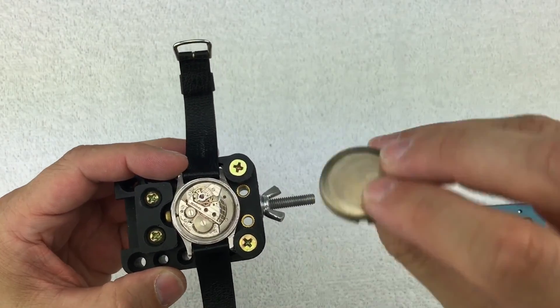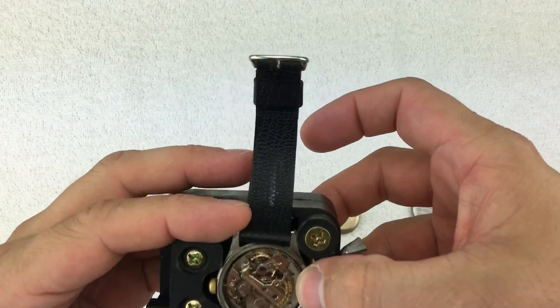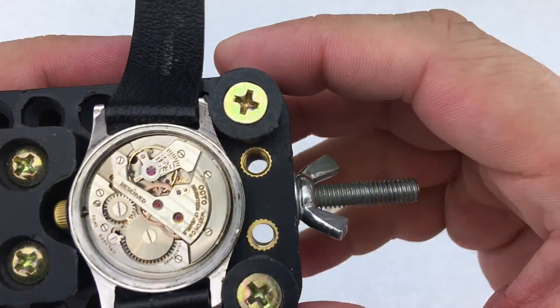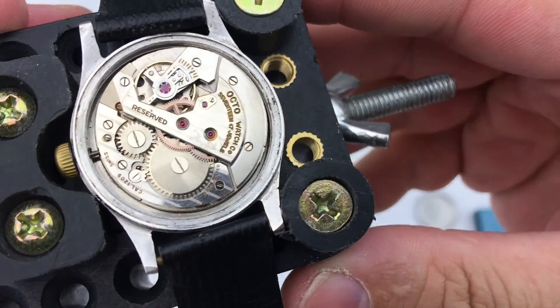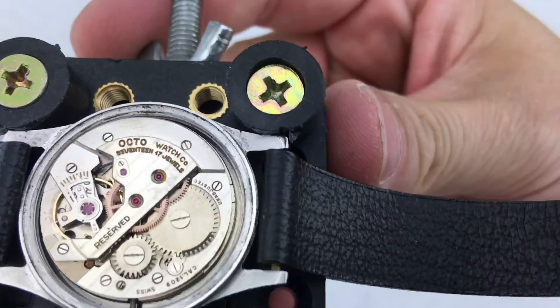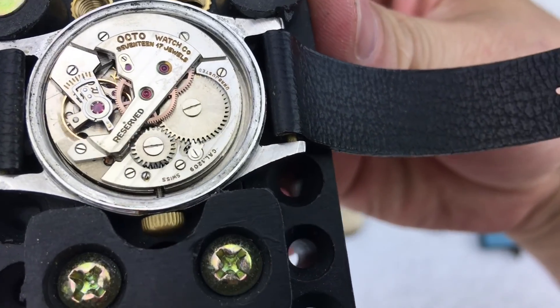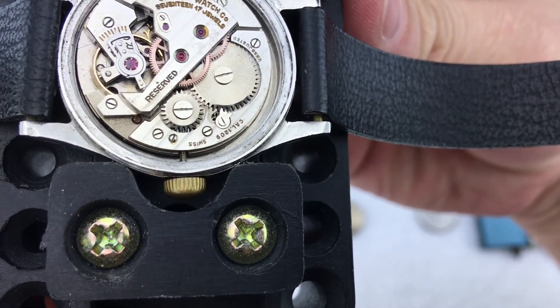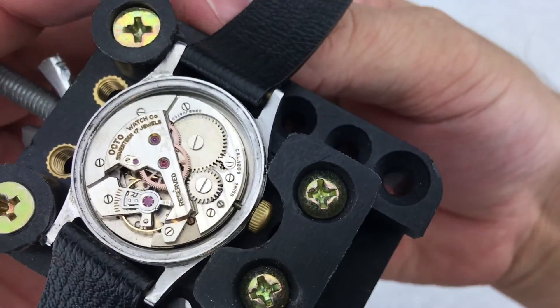All right, so there's the movement. You can see it says Octo Watch 17 jewels, caliber 1209 Swiss.